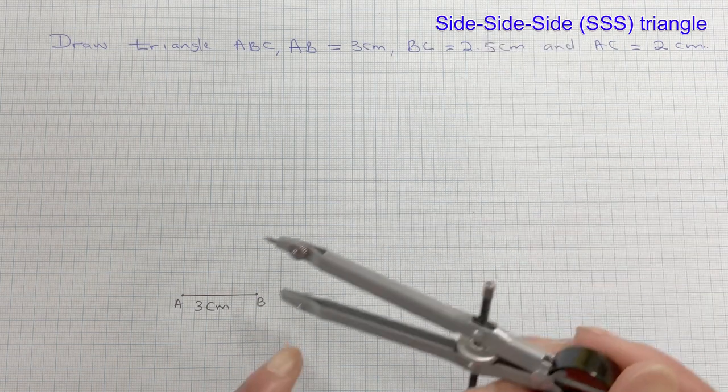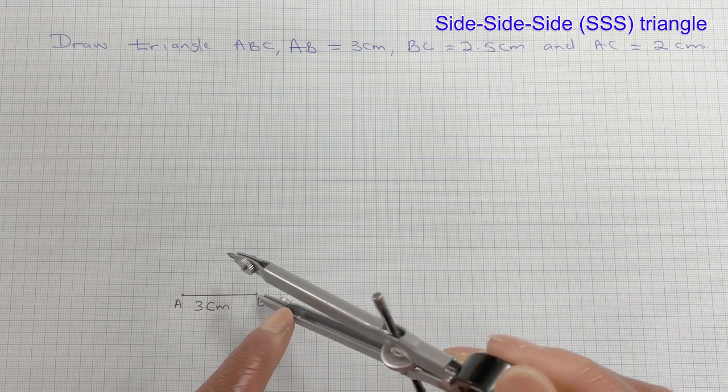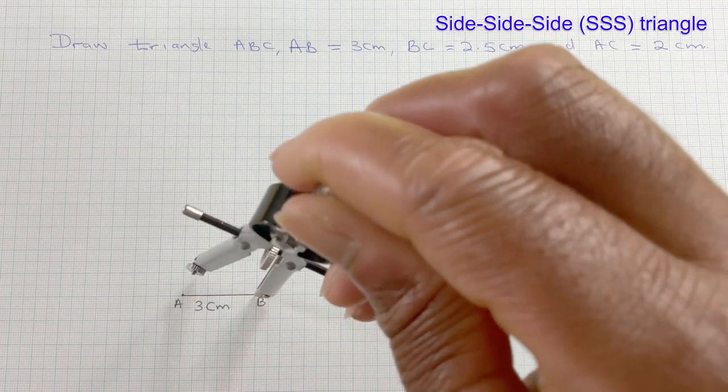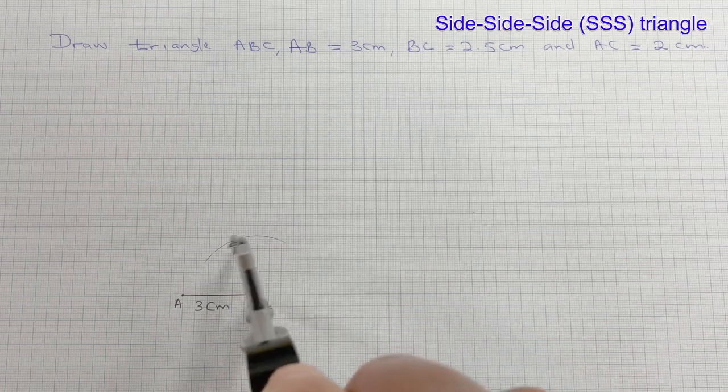So I need to go to B, put the compass there, and draw an arc of 2.5.